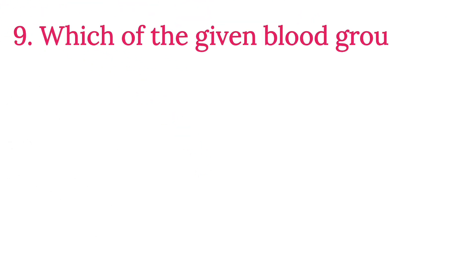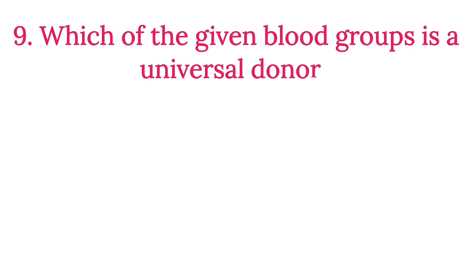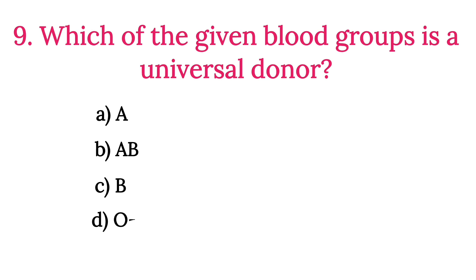MCQ Number 9: Which of the given blood groups is a universal donor? Option A: A Group. Option B: AB Group. Option C: B Group. Option D: O Negative. The correct option is Option D, O Negative.